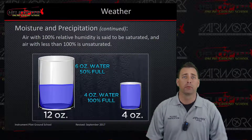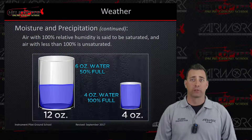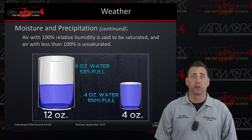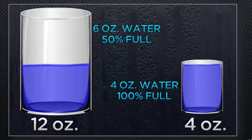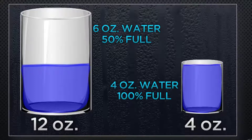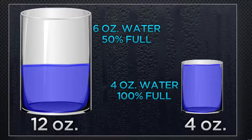Air with 100% relative humidity is said to be saturated, and air with less than 100% is unsaturated. If you look at this picture, you can see we have a 12-ounce glass of water with 6 ounces in it — therefore its relative humidity is 50% full. On the other hand, you have a 4-ounce glass with 4 ounces of water in it, so it is 100% full.